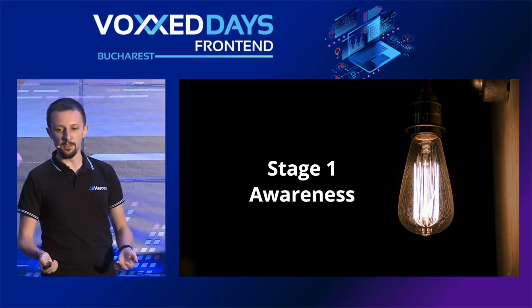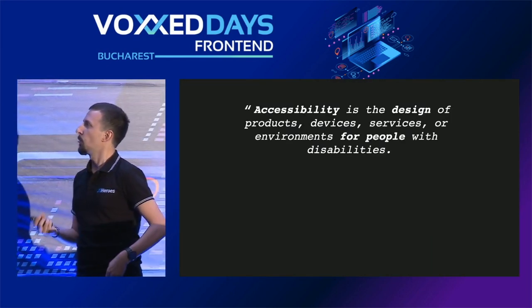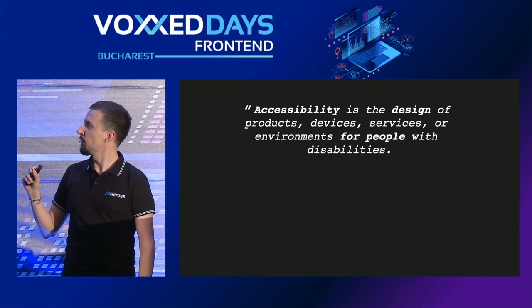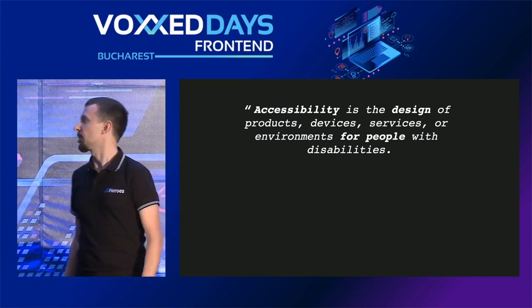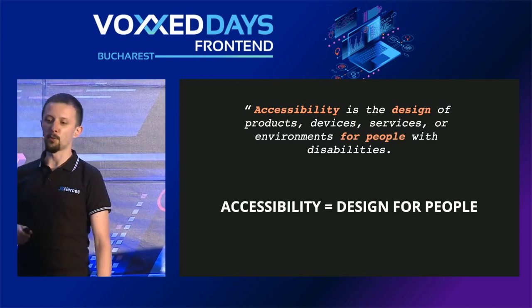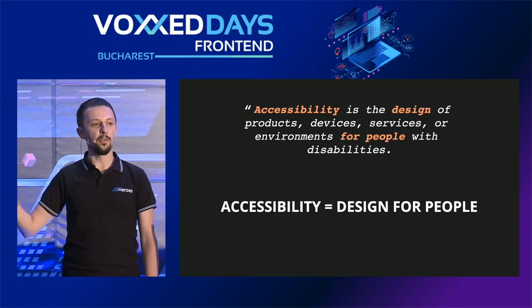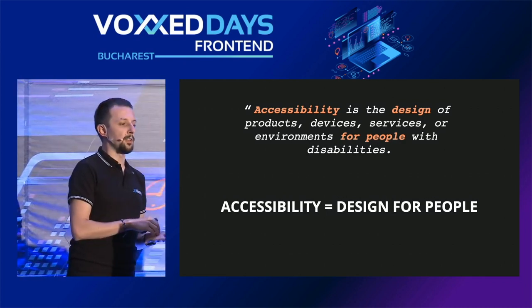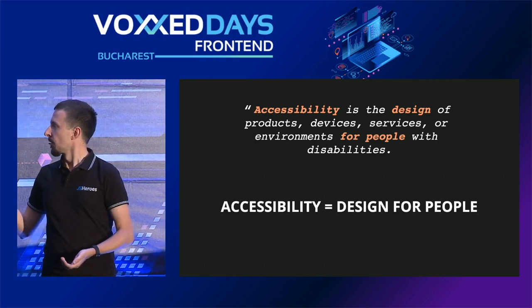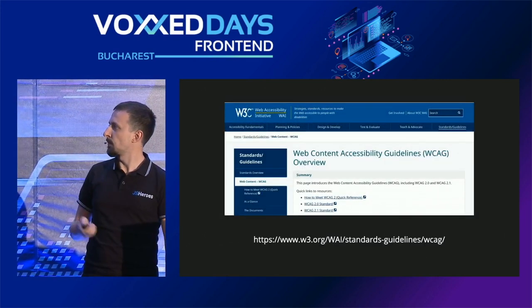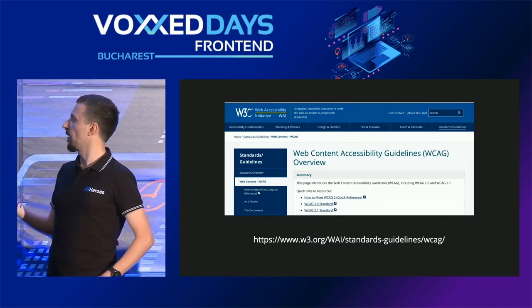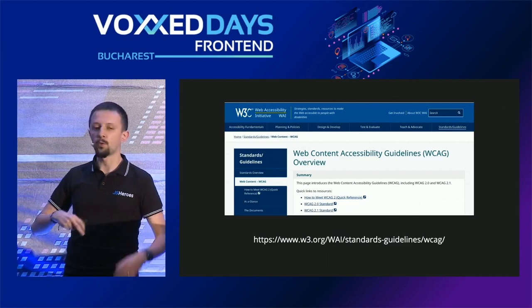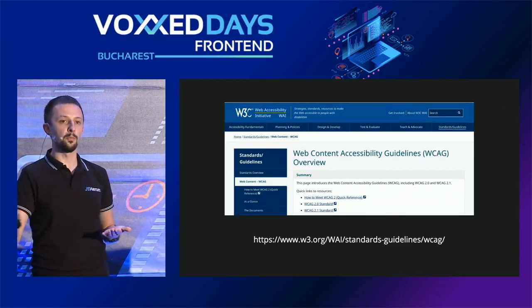According to Wikipedia, accessibility is the design of products, devices, services or environments for people with disabilities. From this definition I'd like to highlight something very important: accessibility is designed for people. This will be a recurring theme throughout the talk — it makes it a very human-centric activity. Accessibility is defined as a standard by W3C's Web Accessibility Initiative through the Web Content Accessibility Guidelines, currently at version 2.1.